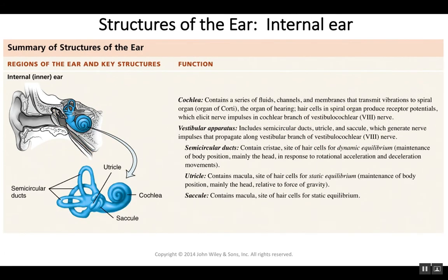The complicated inner ear structure is often called the bony labyrinth — a very complicated set of tunnels, tubes, and canals. This bony labyrinth can be divided into two structures: the cochlea, which is involved in hearing, and the vestibular apparatus, which is involved in equilibrium.